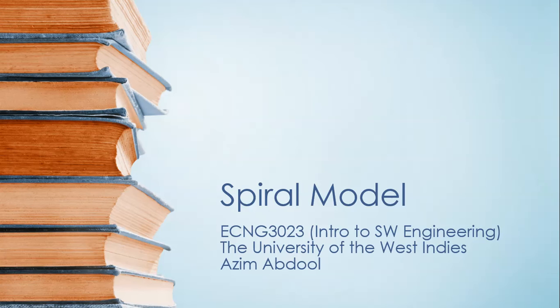At the other end of the sophistication scale from the Code and Fix Model is the Spiral Model. The Spiral Model is a risk-oriented lifecycle model that breaks up a software project into mini-projects. Each mini-project addresses one or more major risks until all the major risks have been addressed.